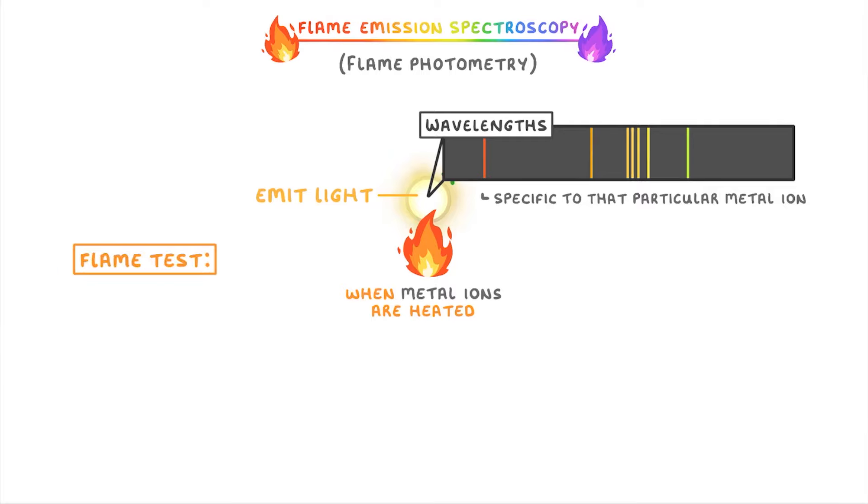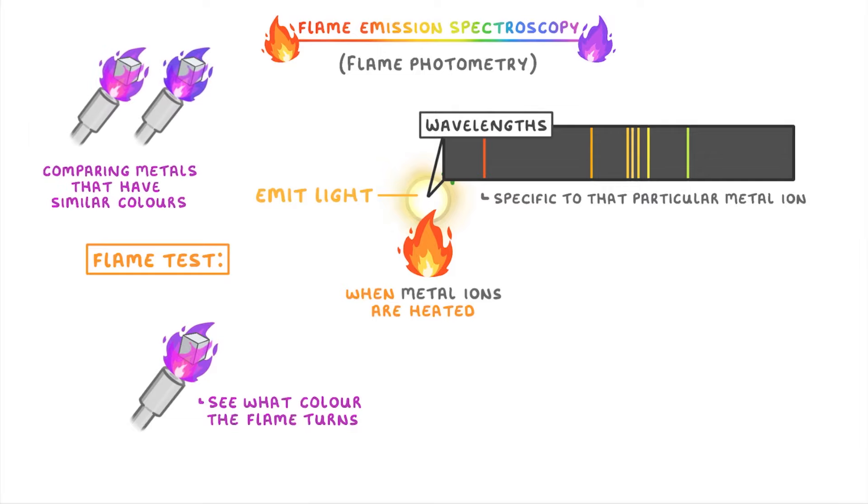If you remember, in the flame test, we just heat the metal over a Bunsen burner flame and see what color the flame turns. This works pretty well as a quick test, but runs into problems if you're comparing metals that have similar colors, or if your sample contains multiple metals and so all the colors get mixed.